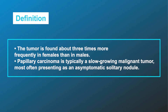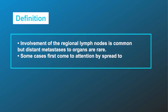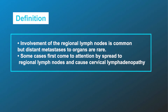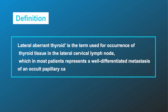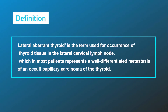Papillary carcinoma is typically a slow-growing malignant tumor, most often presenting as an asymptomatic solitary nodule. Involvement of the regional lymph nodes is common, but distant metastases to organs are rare. Some cases first come to attention by spread to regional lymph nodes and cause cervical lymphadenopathy.